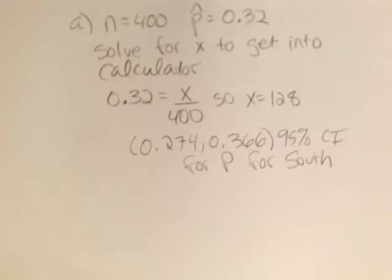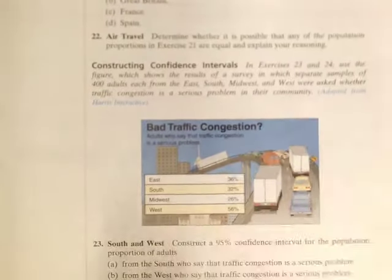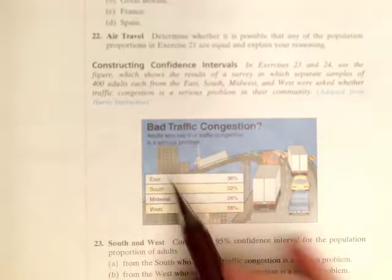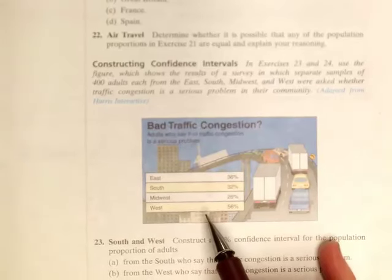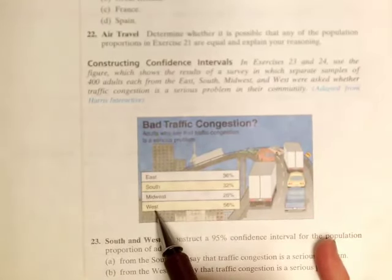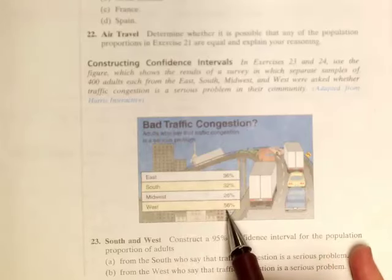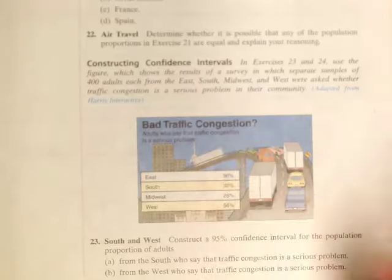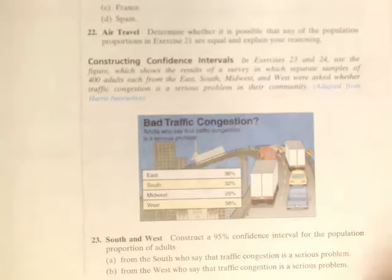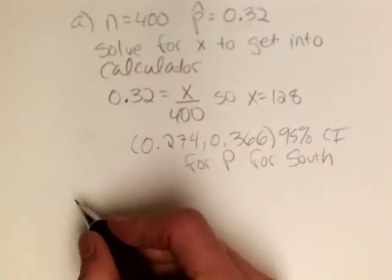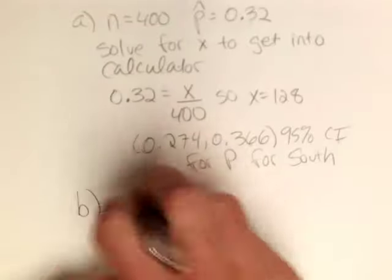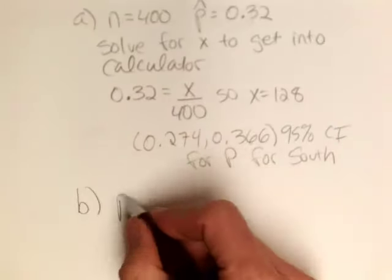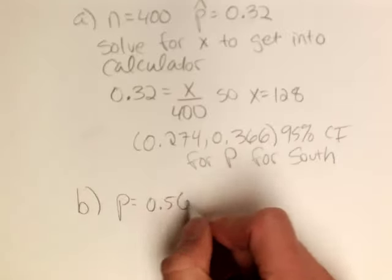Now I need to do the same process, but this time I need to do it for the west. So the sample size is the same, it's 400 for all four categories. Now, my p-hat is different though. For the west, 56% of adults said that traffic congestion is a serious problem. So now p-hat this time is 0.56.